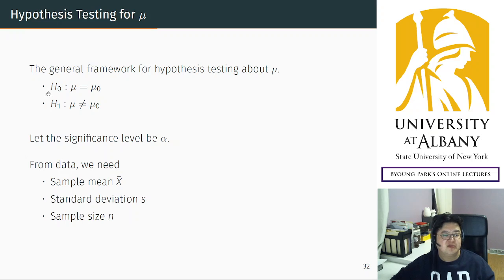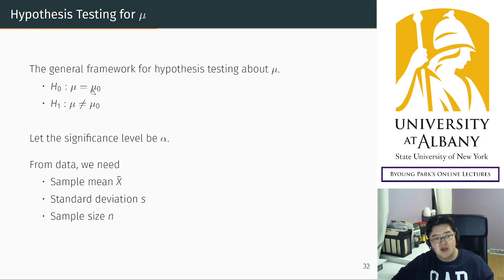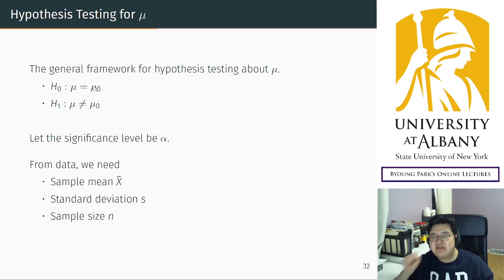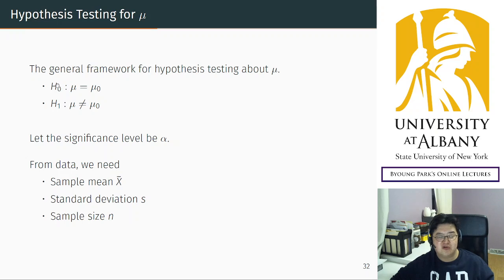We are going to consider the null hypothesis that the population mean is a certain number mu zero. Remember, it is actually a number — this is a parameter, a specific value, like 30 hours or whatever. It's your belief. And H1 is the alternative, simply the negation — if your belief is wrong, you are taking something different.